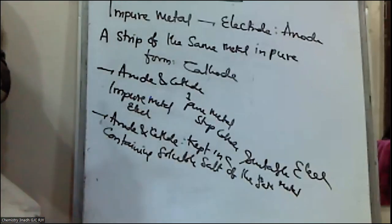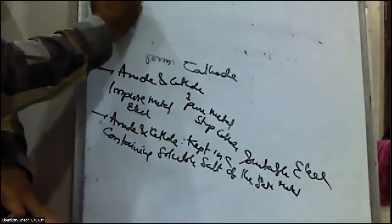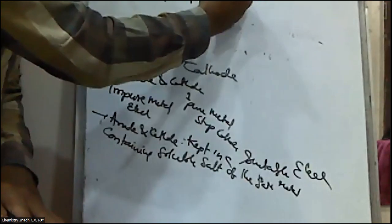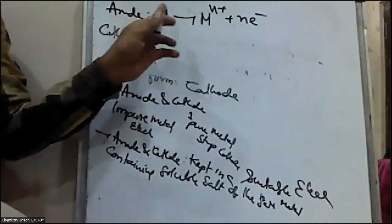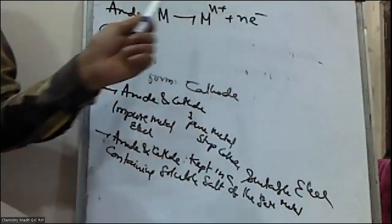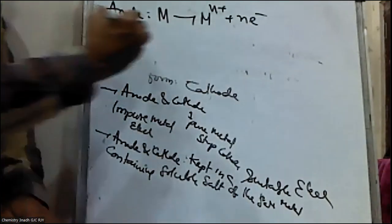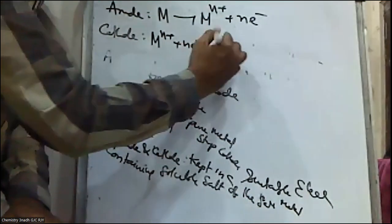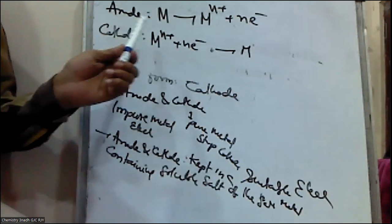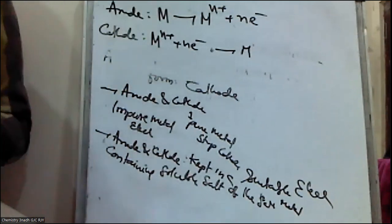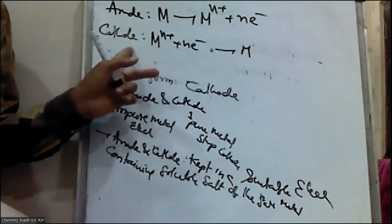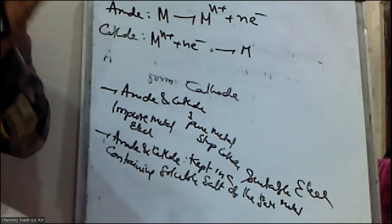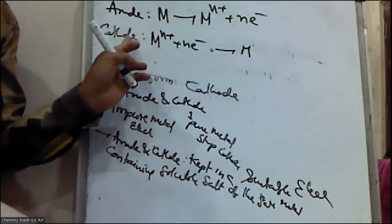During electrolysis, when electricity is passed through these electrodes, the reactions occurring at the anode cause the metal to decompose as M → Mn⁺ + ne⁻. These ions initially go into the solution, and from the solution they are attracted to the cathode and deposit as M — that is, Mn⁺ + ne⁻ → M. The required metal gets deposited on the cathode.